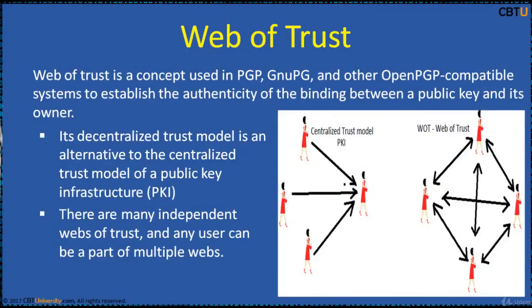Web of Trust: In cryptography, Web of Trust is a concept used in PGP, GPG and other OpenPGP-compatible systems to establish the authenticity of the binding between a public key and its owner. Its decentralized trust model is an alternative to the centralized trust model of PKI, which relies exclusively on a CA certificate hierarchy. There are many independent webs of trust, and any user can be part of or a link between multiple webs.